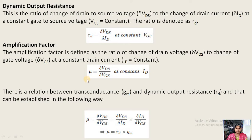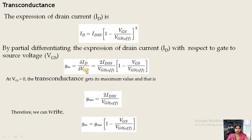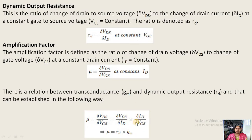The relation between the three parameters is obtained from the expression for Mu. By multiplying and dividing by dID: μ = (dVDS/dID) × (dID/dVGS). Since dVDS/dID is drain resistance Rd, and dID/dVGS is GM, we get: μ = Rd × GM.